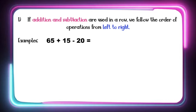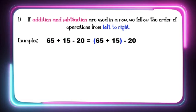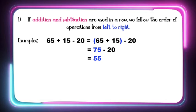65 plus 15 minus 20 equals blank. As you can see, the addition comes first, so we are going to add these two numbers first before we subtract. 65 plus 15 is equal to 75. Then 75 minus 20, that is equal to 55. Good job! Let's have another example.